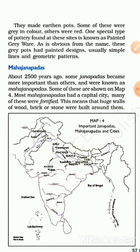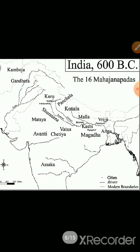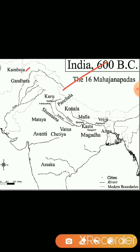Most Maha Janpads had a capital city, and many of these were fortified. Fortified means that huge walls of wood, brick, or stone were built around them to protect against other kings. There were 16 important Maha Janpads — such as Kambhoja, Gandhara, Kuru, Panchala, and Kosala. In total, there were 16 important Maha Janpads.